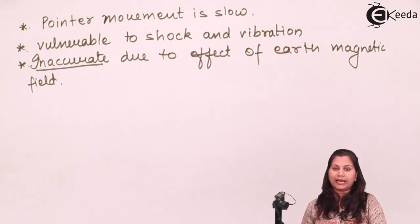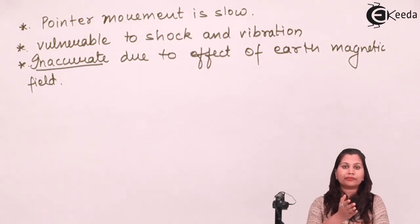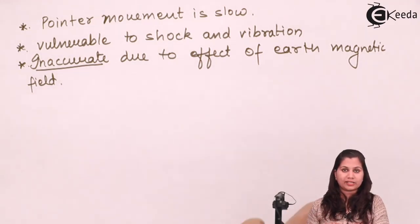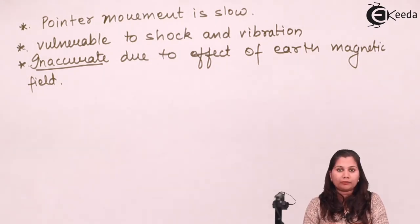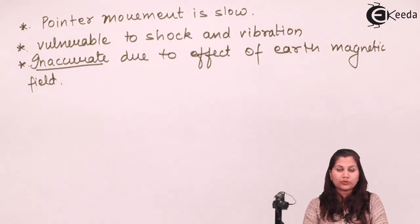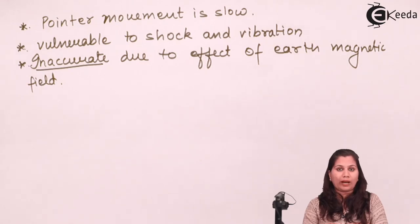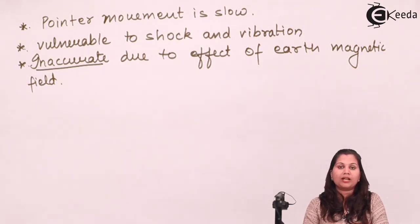Applications include measurement of current, voltage, and resistance — both AC and DC. In this video we studied the analog multimeter: its working principle, construction, how it is used for measurement of voltage, current, and resistance, and its advantages, disadvantages, and applications. I hope this topic is now clear to you. Thank you.